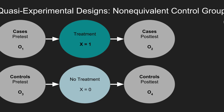In quasi-experimental designs, the researcher adds a control group of participants who do not receive the treatment. Similar to the pre-test post-test design, both groups receive two measurements — a pre-test and a post-test — before and after some type of experimental treatment. However, only the treatment group receives the treatment. Any observed difference between the treatment group and the control group can be presumed to be due to the experimental effect.